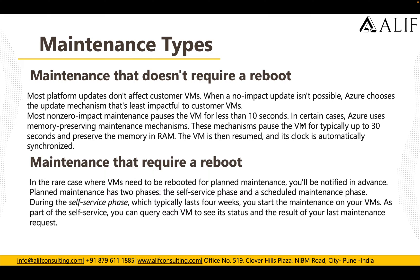There are two types of maintenance. The first is maintenance that does not require a reboot. Most platform updates do not affect customer VMs. When a no-impact update is not possible, Azure chooses the least impactful mechanism. The most non-zero impact maintenance pauses the VM for less than 10 seconds. In certain cases, Azure uses a memory-preserving maintenance mechanism that pauses the VM for up to 30 seconds, preserves memory in RAM, then resumes the VM and automatically syncs its clock.